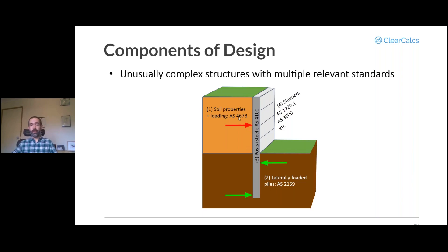First you use AS 4678 to assess the properties of the soil and to calculate the loading of the soil on the retaining wall itself. Then you'll look at the geotechnical capacity of the retaining wall - that means a laterally loaded pile and what the force couple is below that soil. That's AS 2159.